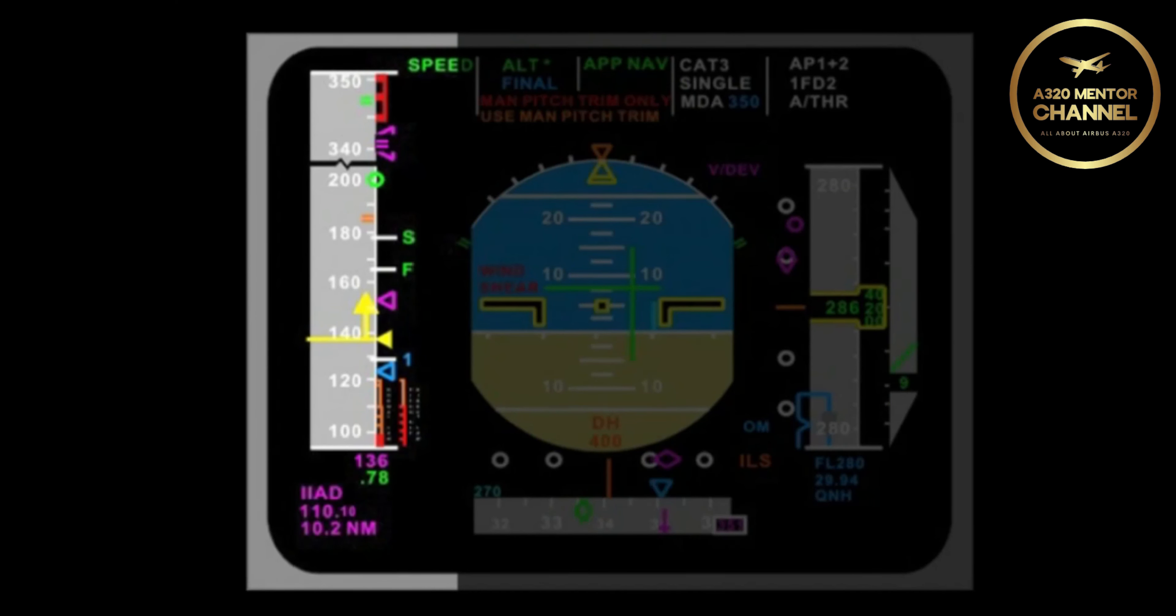If for some reason we degrade from normal law, the tiger's tail disappears. In its place, we still have VLS, but now have a red and black bumblebee. What is that? The top of the red and black is called VSW, or V stall warning. A stall warning can occur anywhere in this range.